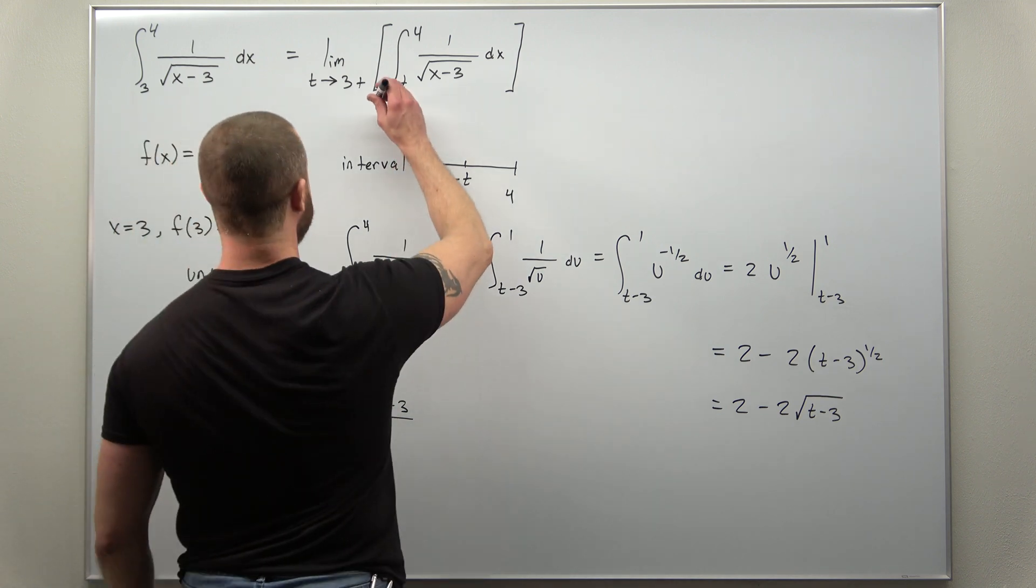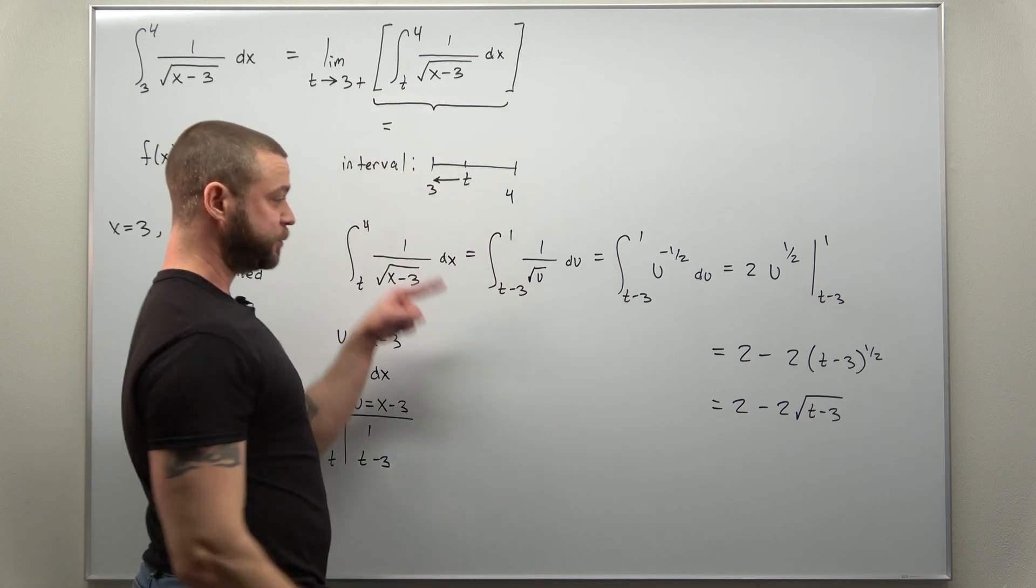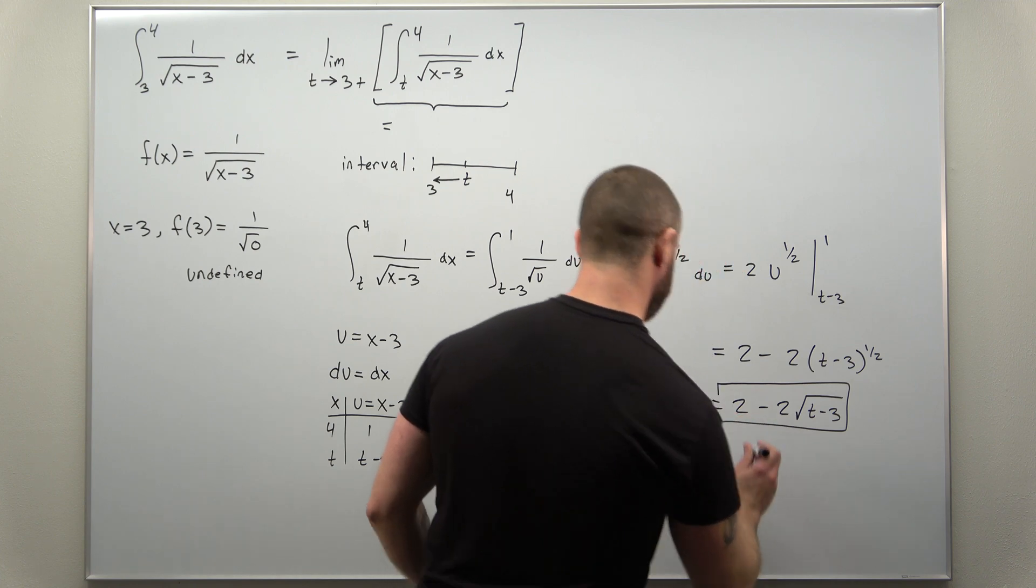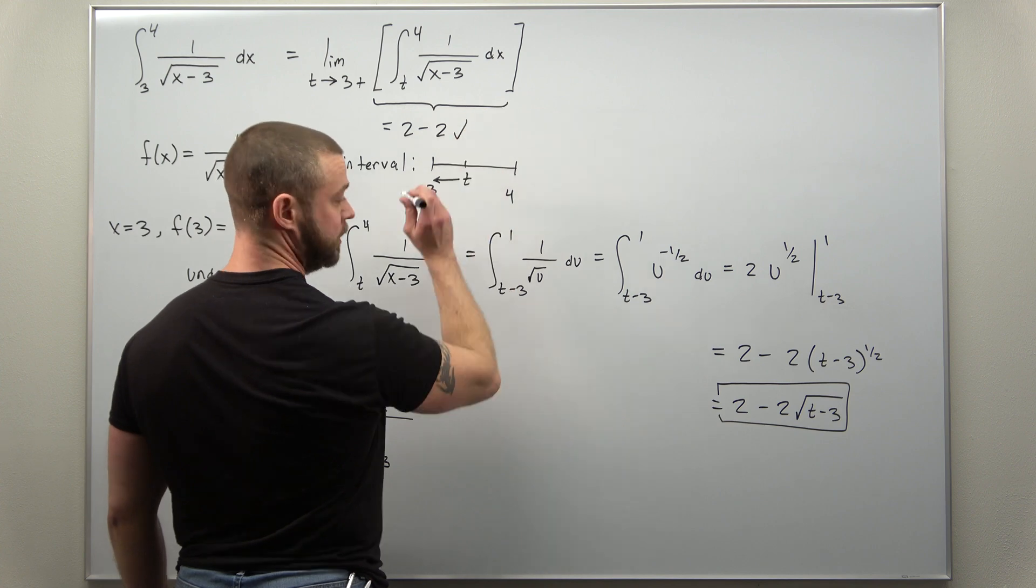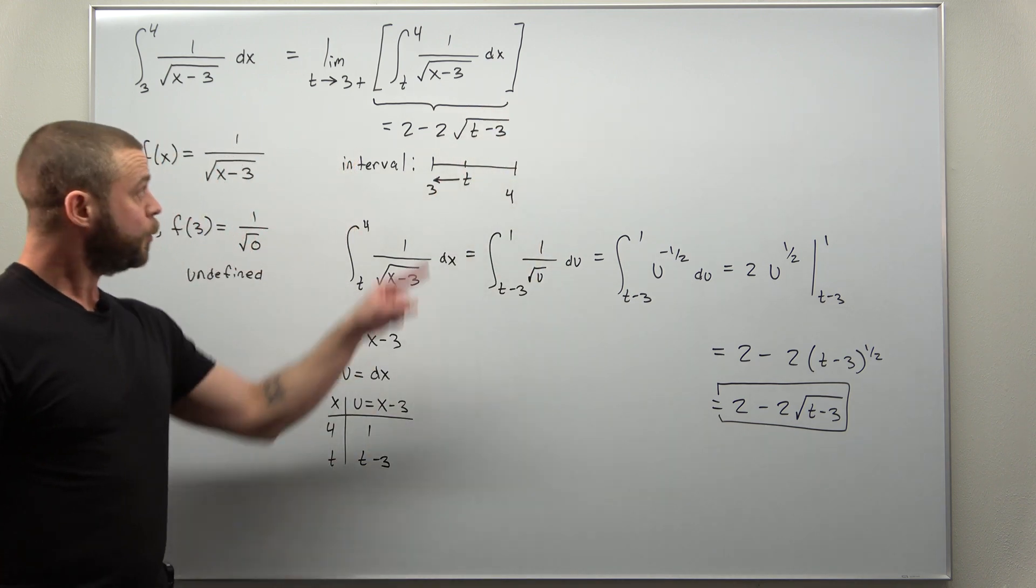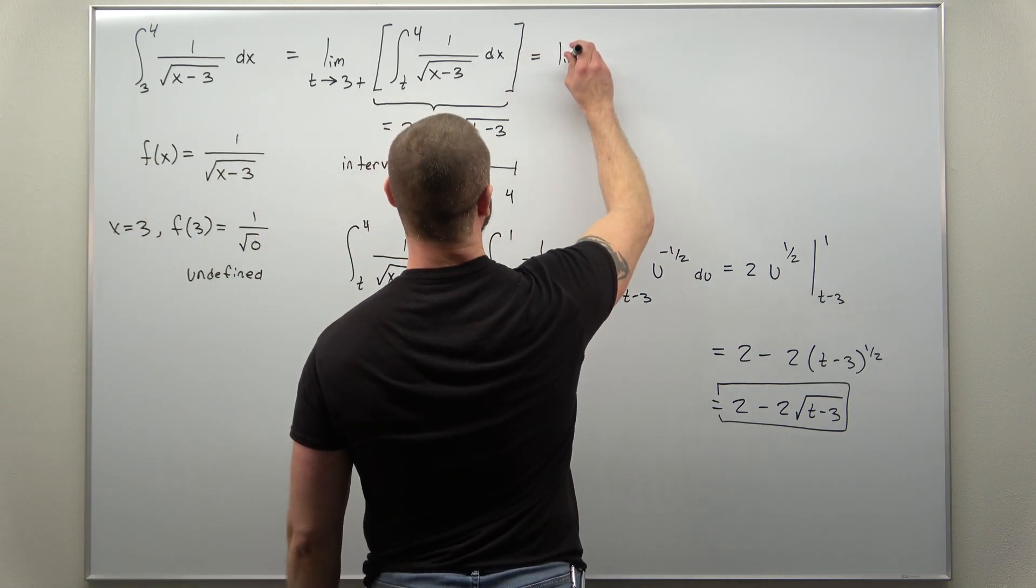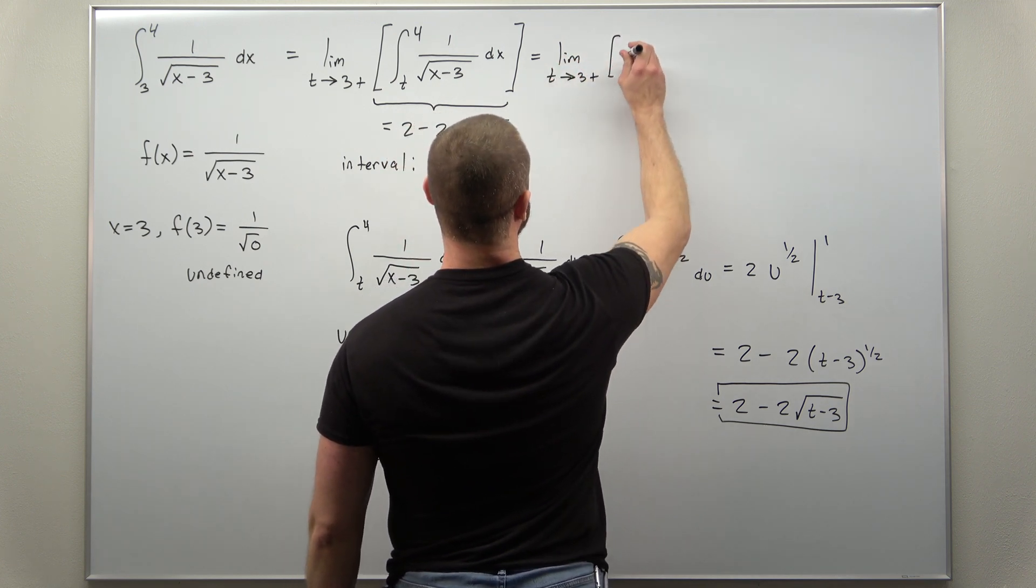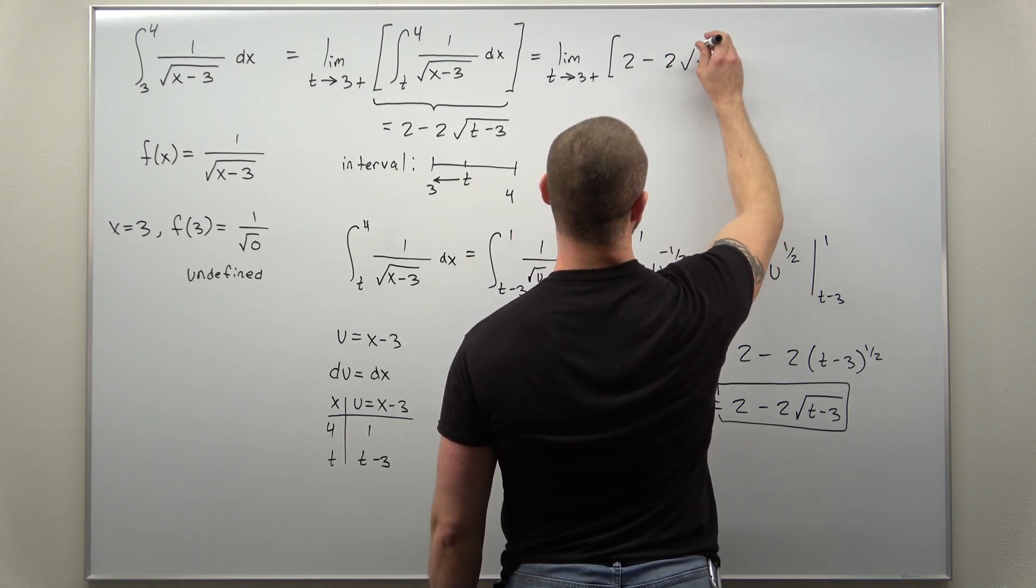And that is all the work for evaluating your integral here. So that is step one: evaluate the integral. Now you can take a limit. So we know this part—that's what we just found. The integral evaluates to 2 minus 2 times the square root of t minus 3. We can plug that in and take a limit now as t approaches 3 from the right of that expression, 2 minus 2 times the square root of t minus 3.